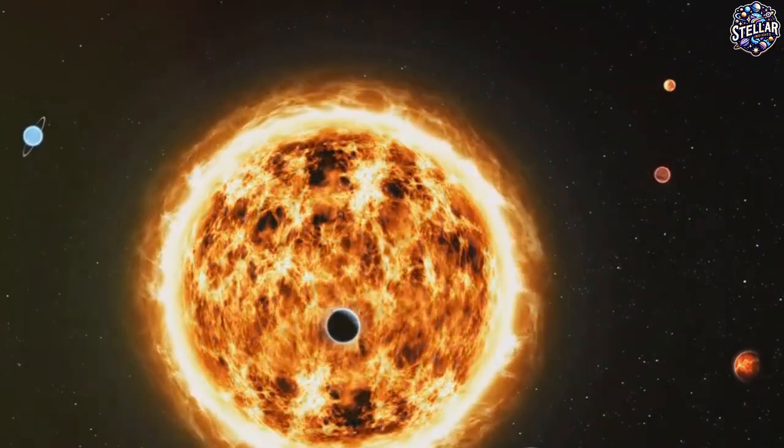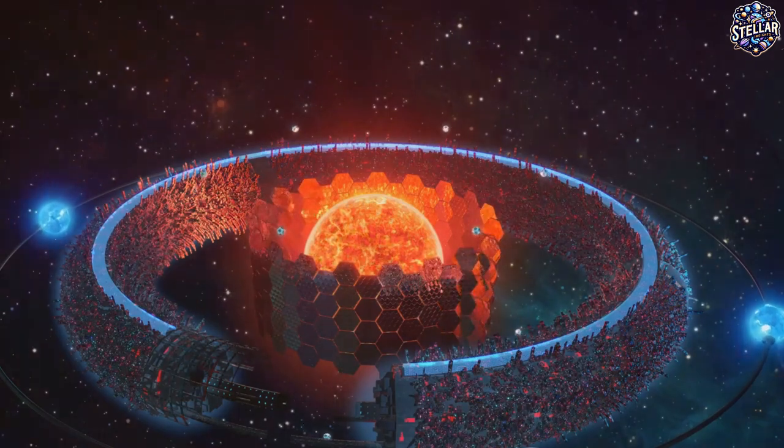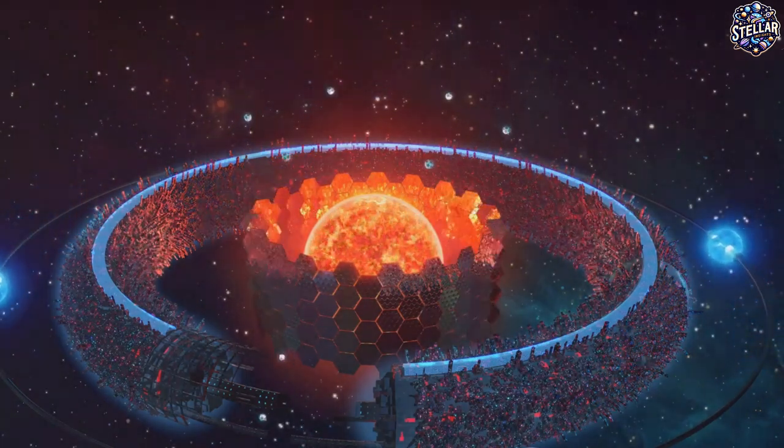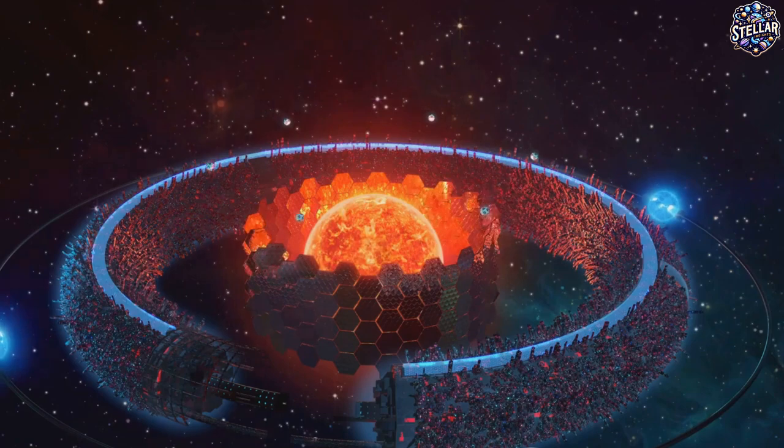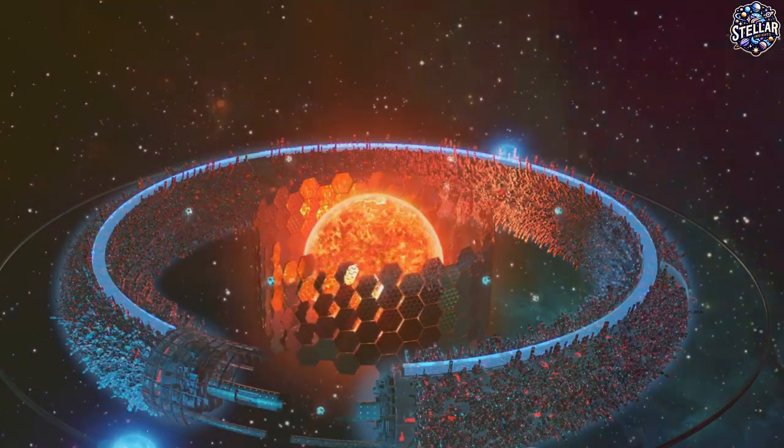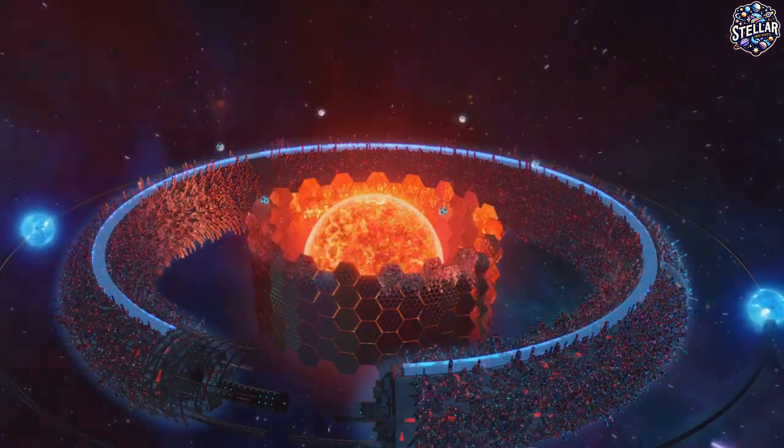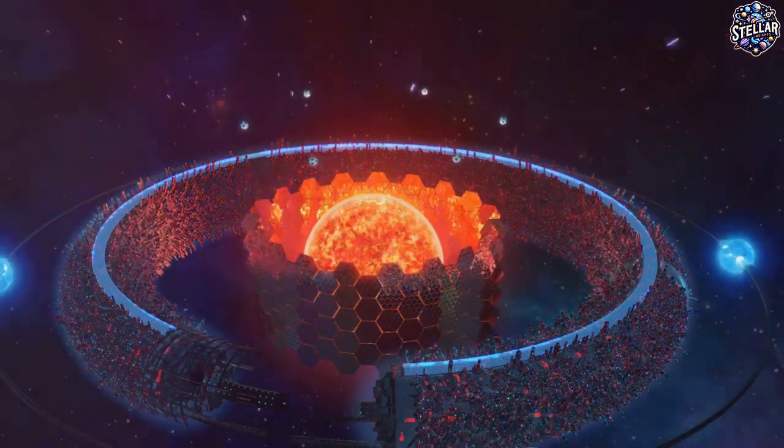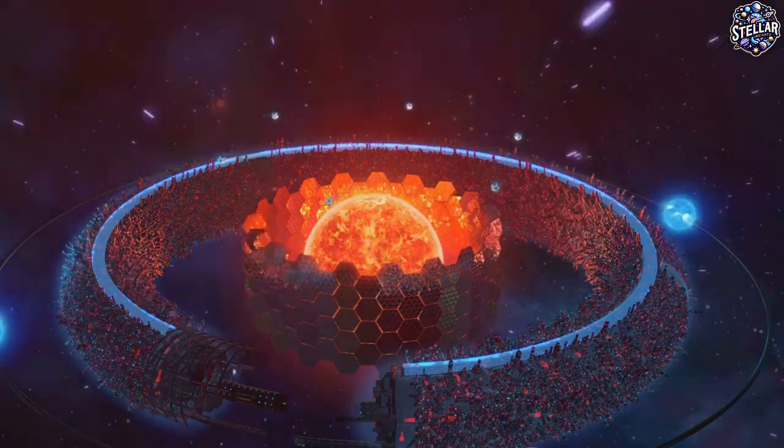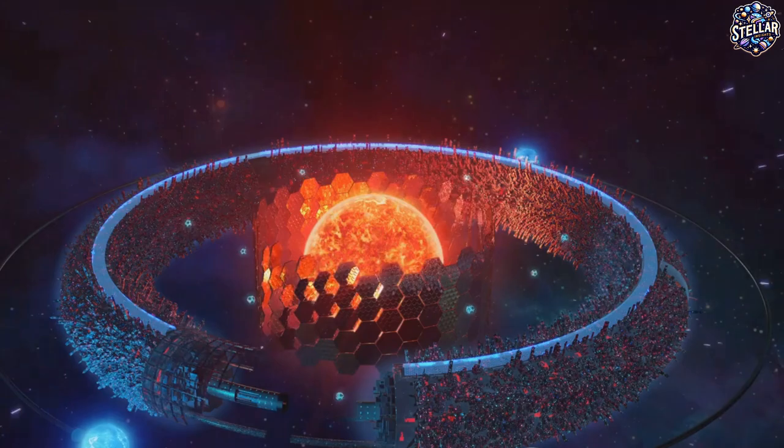Now envision a society so advanced it can capture and utilize this incomprehensible amount of energy. The implications are simply staggering, aren't they? But what exactly are Dyson structures? They come in two main types, the Dyson Swarm and the Dyson Sphere. The Dyson Swarm consists of a large number of independent constructs orbiting in a dense formation around the star, while the Dyson Sphere is a colossal shell completely enclosing a star, which is often depicted in science fiction.